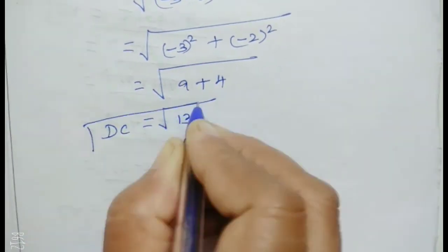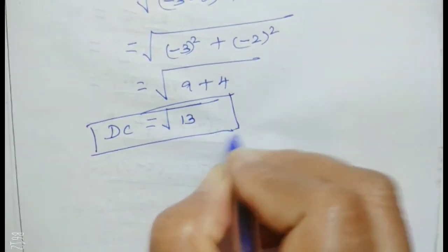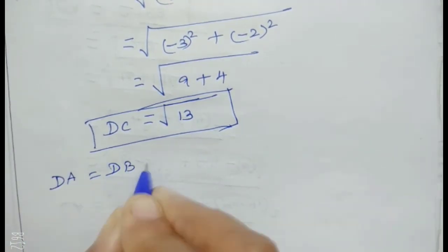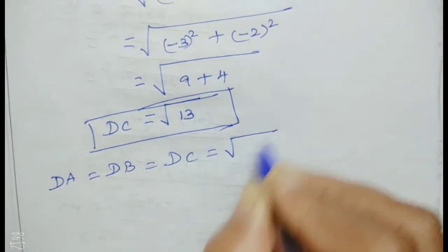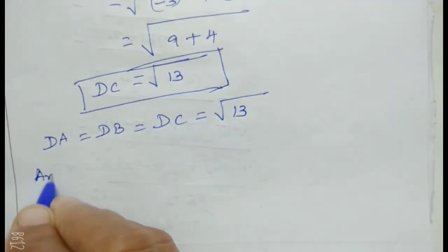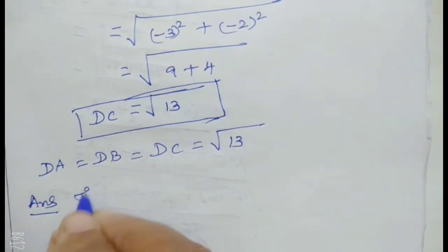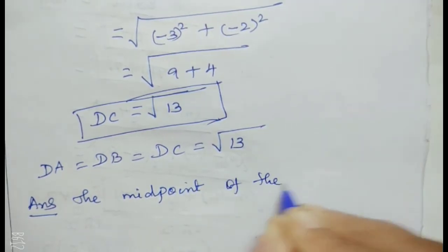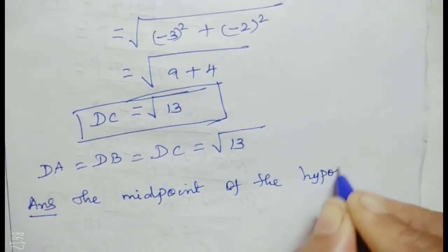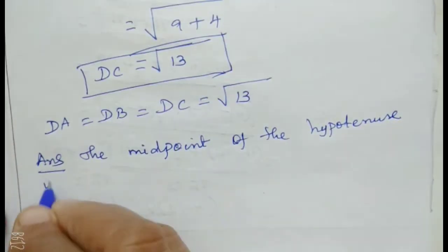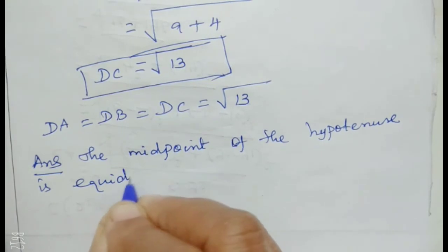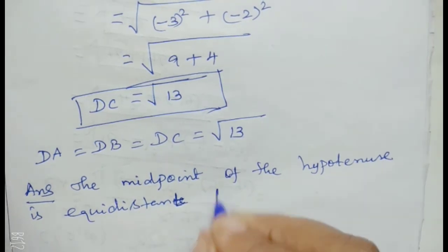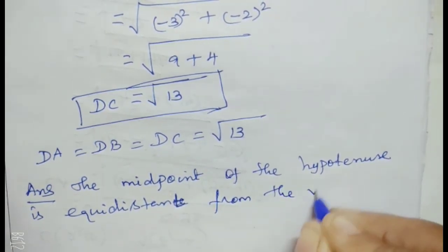Therefore DA = DB = DC = root of 13. The midpoint of the hypotenuse is equidistant from all the vertices.